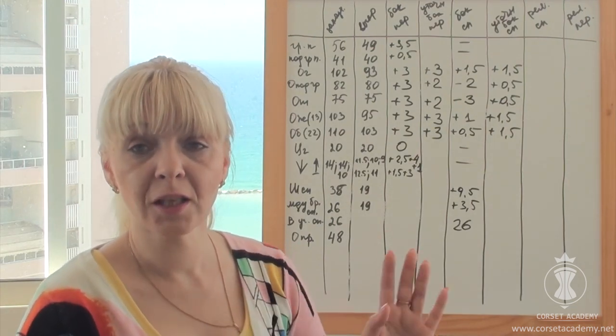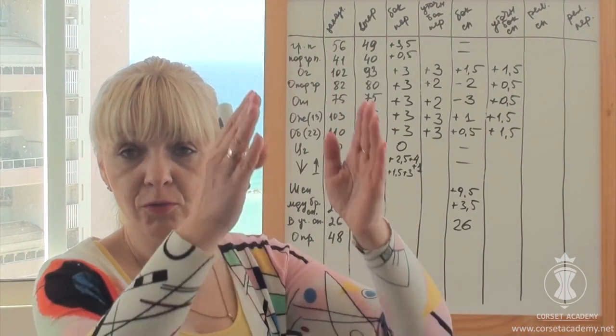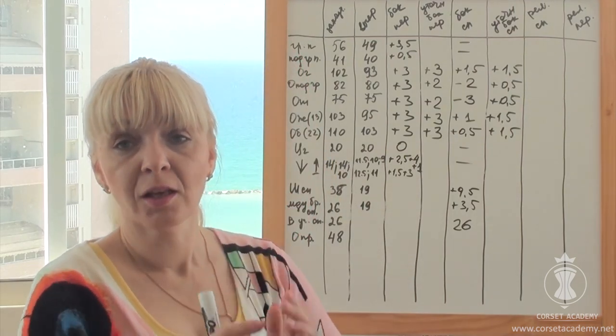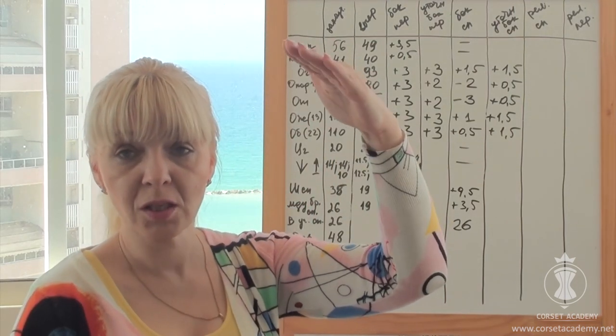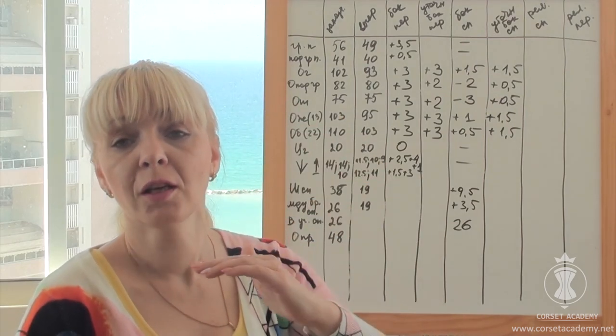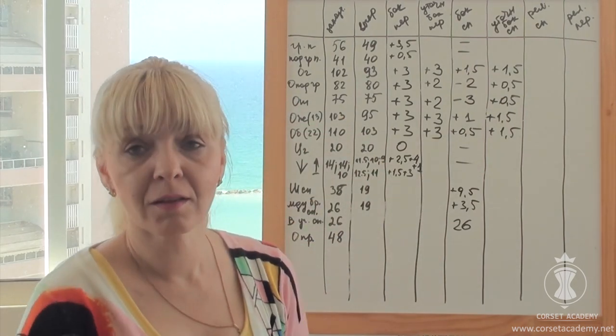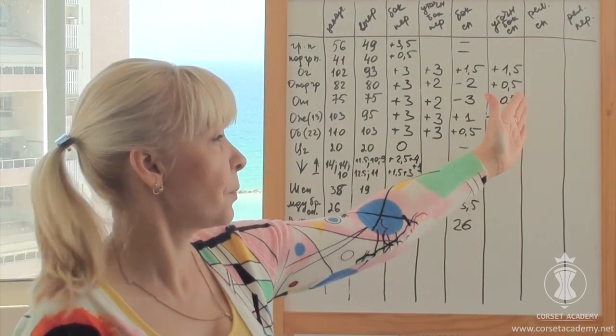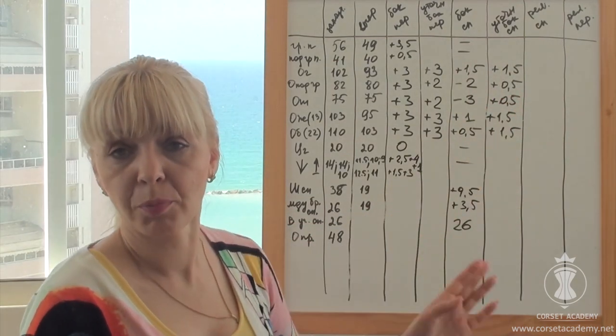We can use the back princess seam at its entire length, that is, alter the entire dart from top to bottom, in the bust, under the bust, in the waist, stomach and hips. It won't affect the configuration of the pattern. On the contrary, the back princess seams will be of great help.